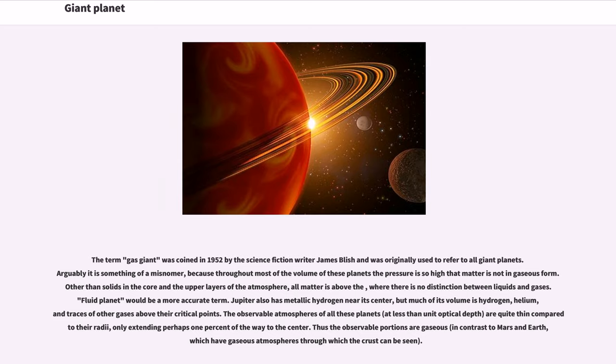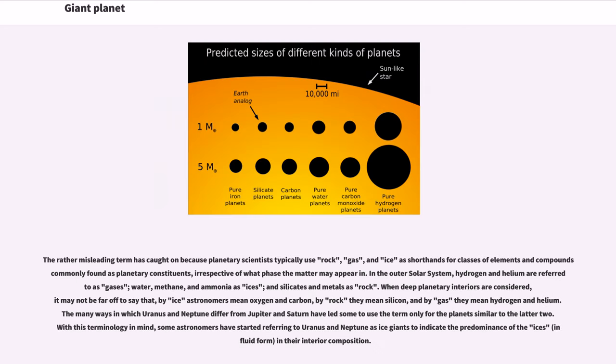Thus the observable portions are gaseous, in contrast to Mars and Earth, which have gaseous atmospheres through which the crust can be seen. The rather misleading term has caught on because planetary scientists typically use rock, gas, and ice as shorthands for classes of elements and compounds commonly found as planetary constituents, irrespective of what phase the matter may appear in. In the outer solar system,